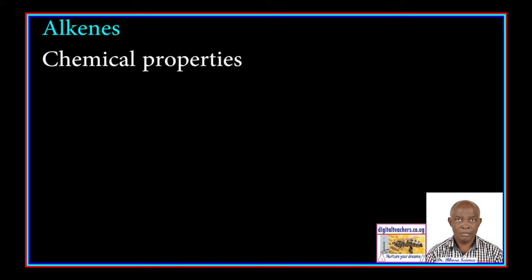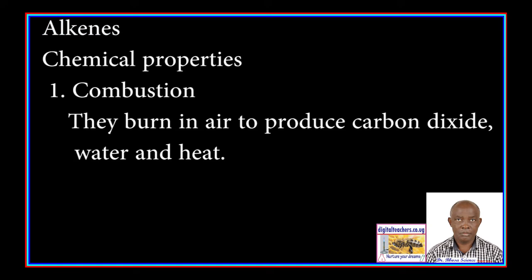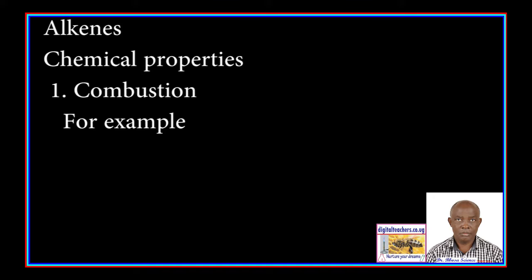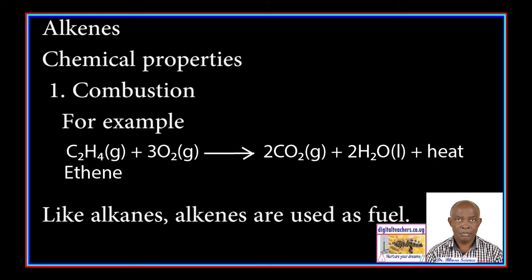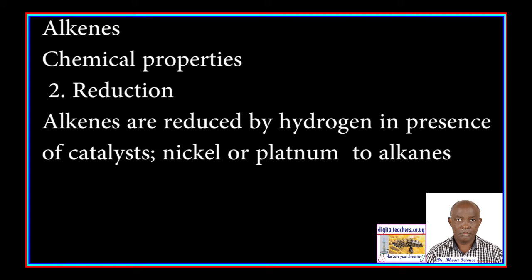Chemical properties. 1. Combustion: alkenes burn in air to produce carbon dioxide, water, and heat. For example, ethene plus oxygen gives carbon dioxide plus water and heat. Like alkanes, alkenes are used as fuels.